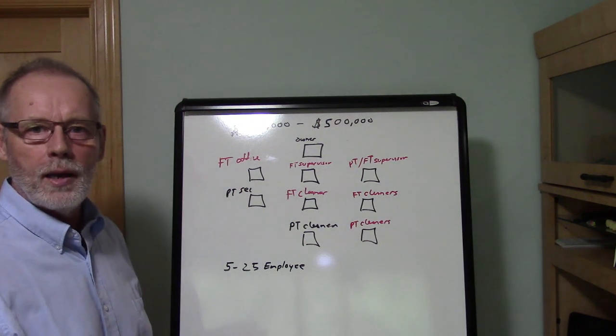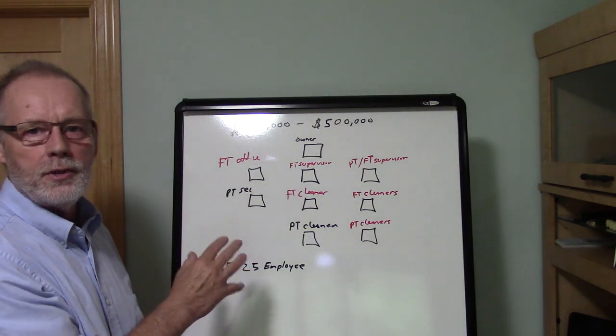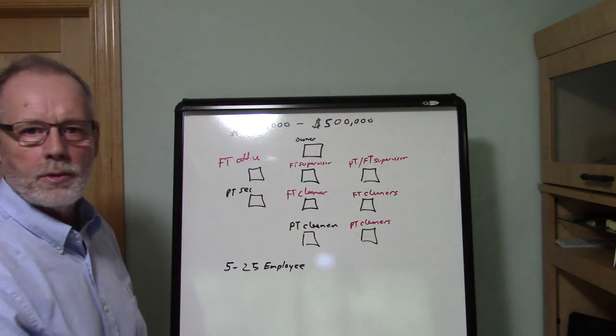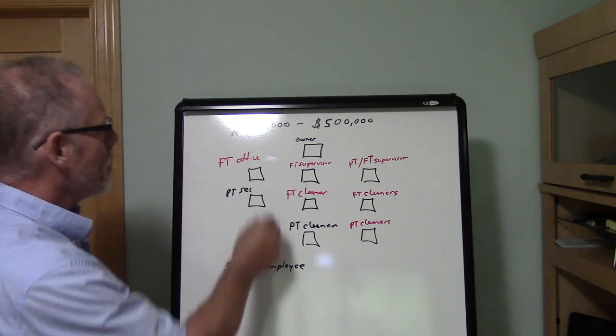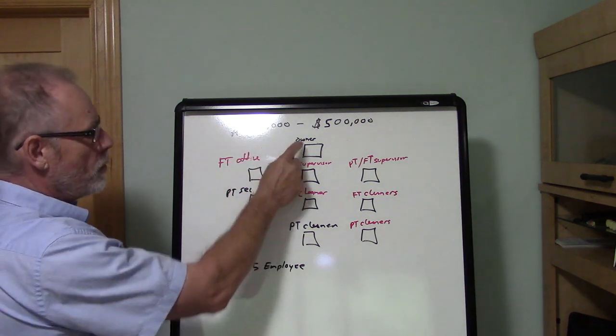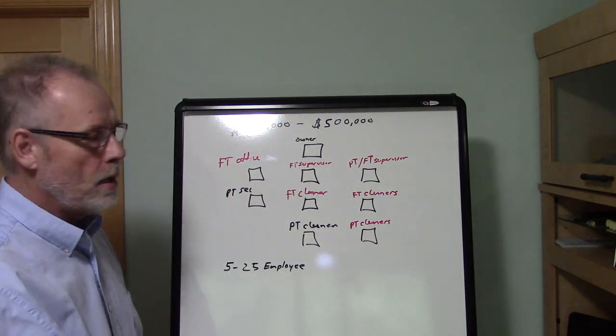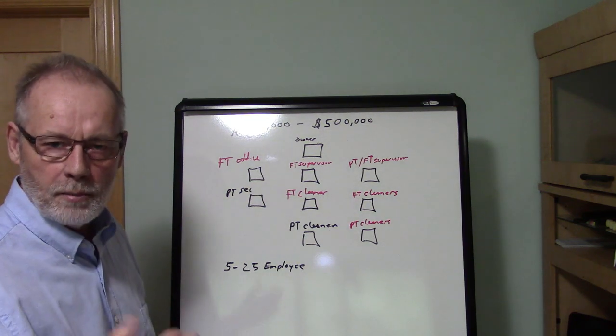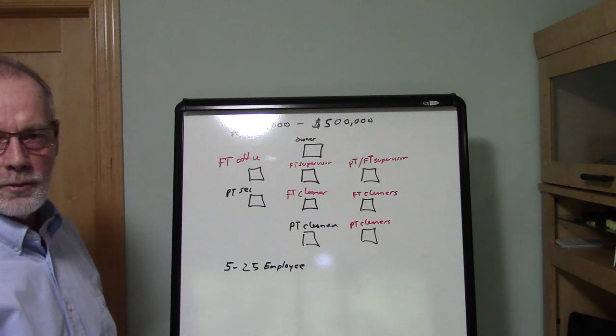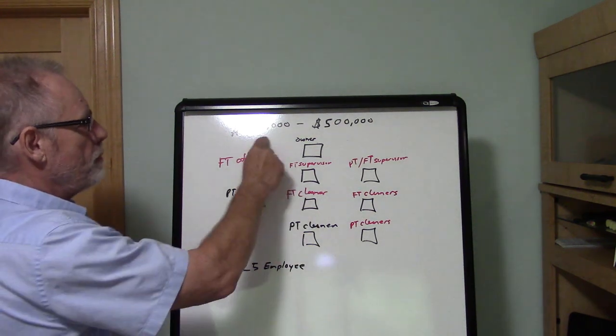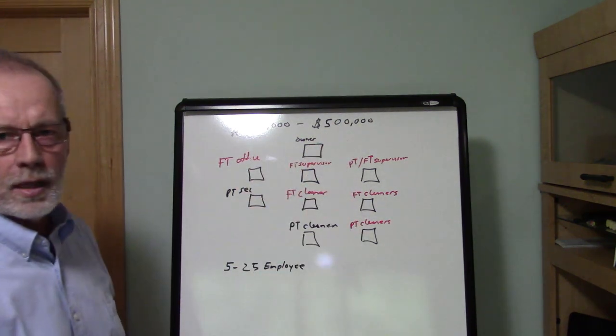In this example, at $250,000, we have the owner, then we've got part-time cleaners. The owner is still cleaning and they're still managing and wearing all the hats and generating $250,000 in revenue. Now, in order for them to scale and go up to $500,000 in revenue, obviously we know that first of all they're going to have to have a good marketing system in place so they can get leads, do walkthroughs, get proposals, and close deals.